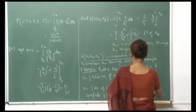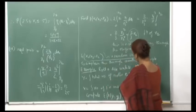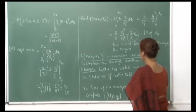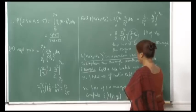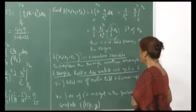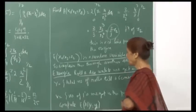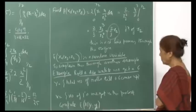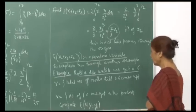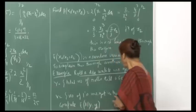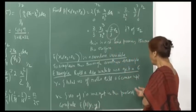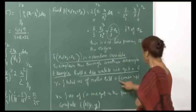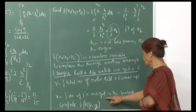I will continue with this concept and take another example to make things clear. This example: roll a die until we get a 6. The experiment continues rolling a die until a 6 comes up. Let Y be the random variable equal to the total number of rolls until a 6 comes up, and X is the number of 1's we get in this process — while rolling the die, we keep noting the number of times 1 appears.